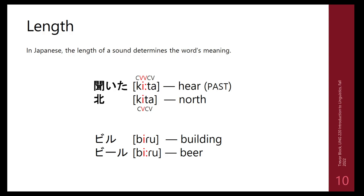CV structure also underlies vowel length. In Japanese, 'kita' versus 'kiita' have different meanings: the long 'i' is linked to two vowel positions in the CV tier while the short one links to only one. Similarly 'bidu' versus 'biidu' (beer) differ in length. A length mark after a symbol just means you pronounce that sound a bit longer — 'kita' vs 'kiita', or 'hapi' vs 'hapii'.